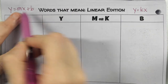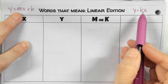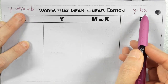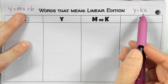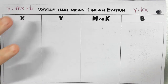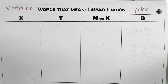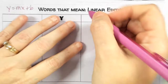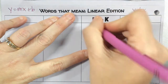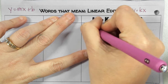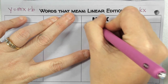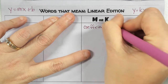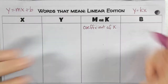This number in front of the X — we've got lots of different names for it. We've got all these different words that mean the number in front of the letter: the coefficient of X. So the first one we're going to write down is coefficient of X.